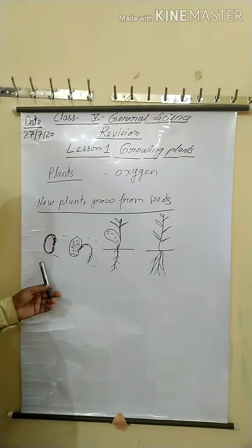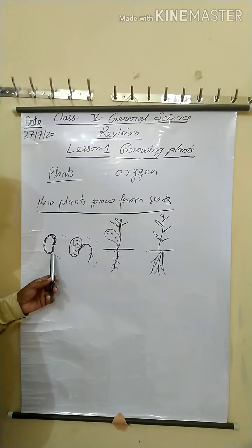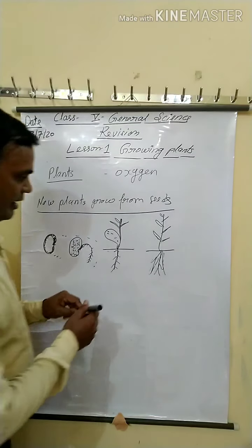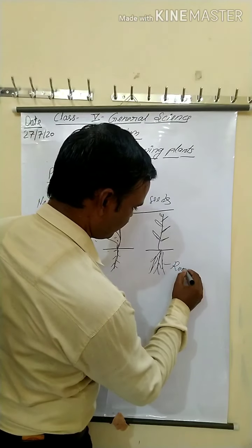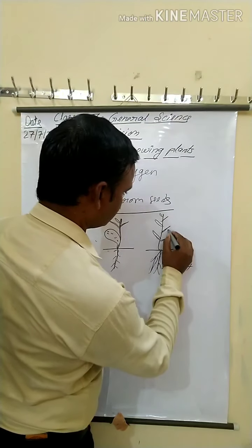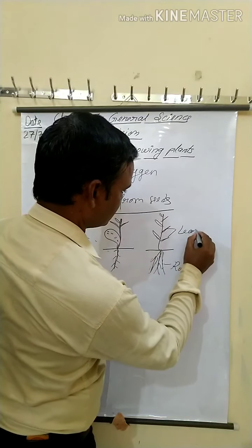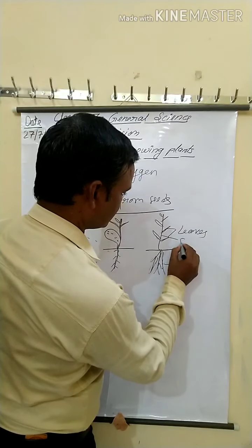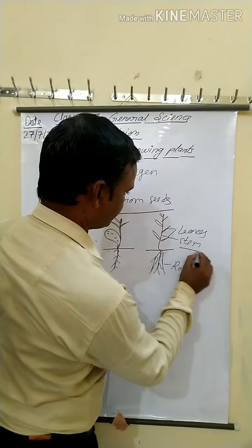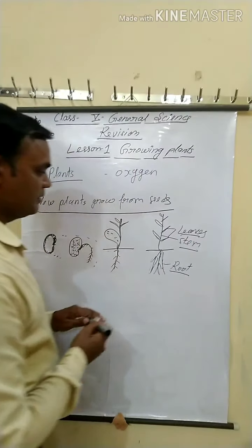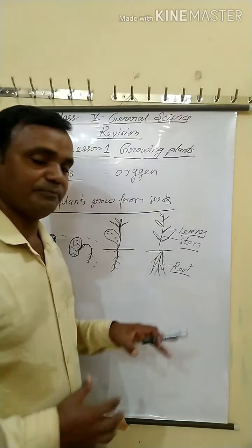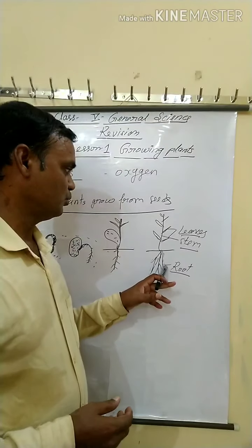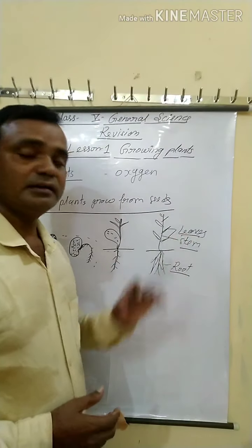When a seed gets a proper amount of moisture, oxygen, and warmth, it starts to germinate. After a few days, the root, leaves, and stem develop into a new plant with well-developed roots, stem, and leaves.